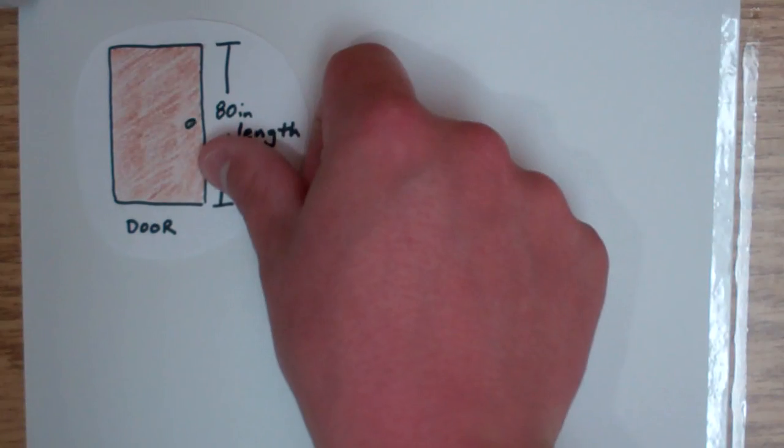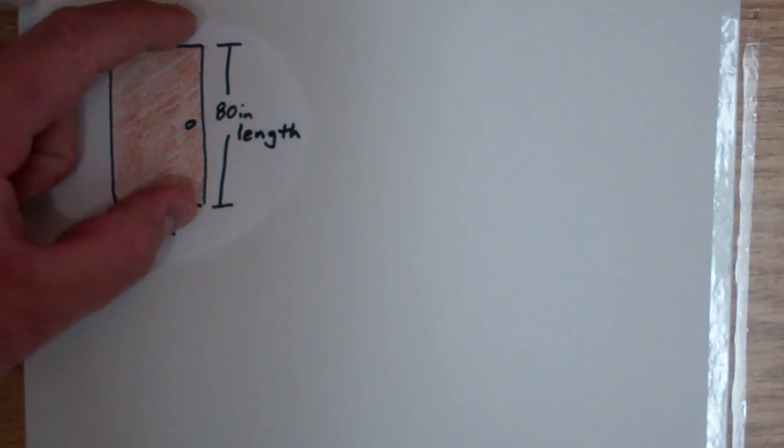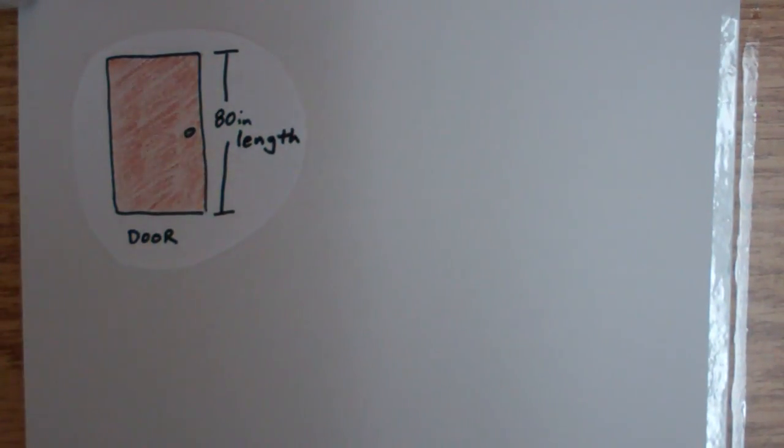Now space comes in many dimensions, so let's say I have a door here and I want to know the length of the door. Well, that is one dimension.